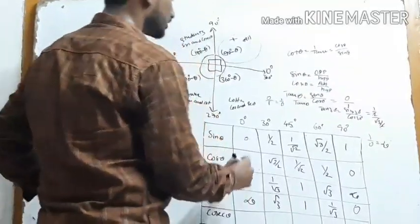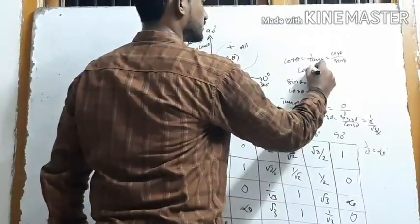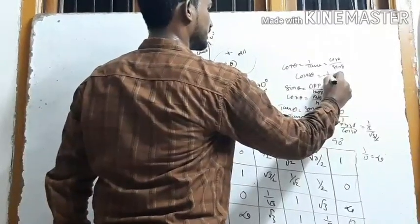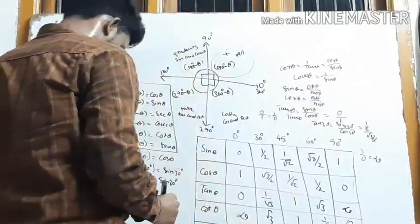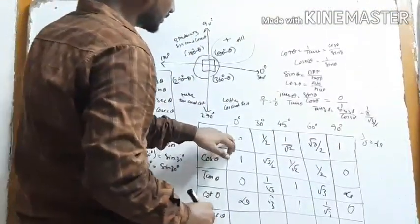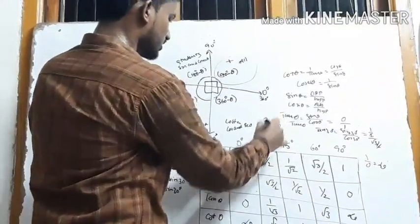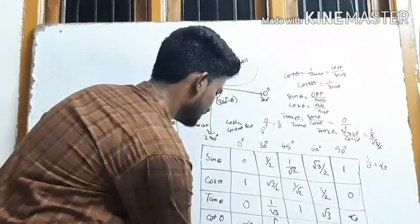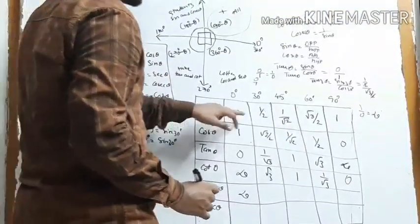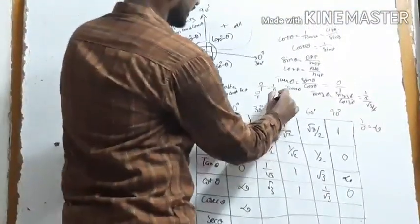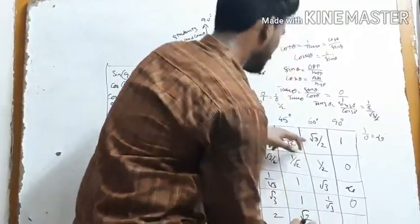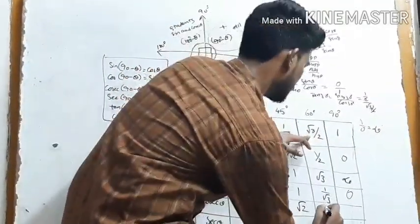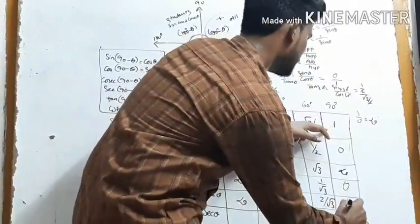Cosecant theta equals 1 by sin theta. So cosec 0° = 1/0 = infinite. Cosec 30° = 1/(1/2) = 2. Cosec 45° = 1/(1/√2) = √2. Cosec 60° = 2/√3. Cosec 90° = 1.